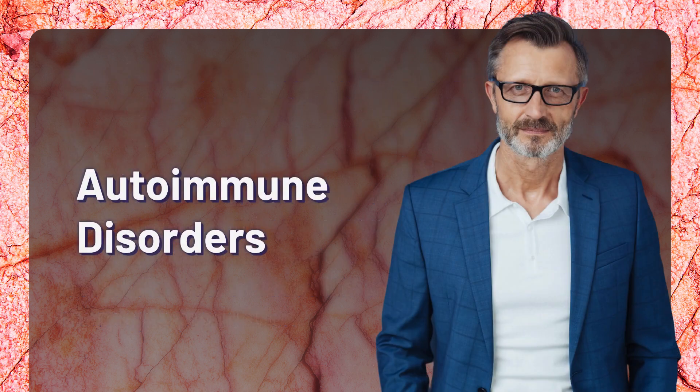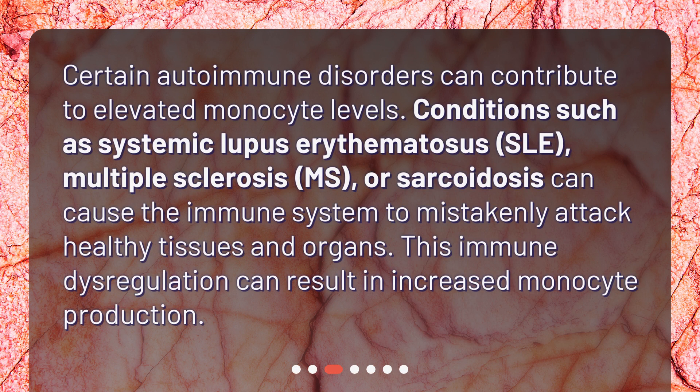Autoimmune Disorders: Certain autoimmune disorders can contribute to elevated monocyte levels. Conditions such as systemic lupus erythematosus, multiple sclerosis (MS), or sarcoidosis can cause the immune system to mistakenly attack healthy tissues and organs. This immune dysregulation can result in increased monocyte production.